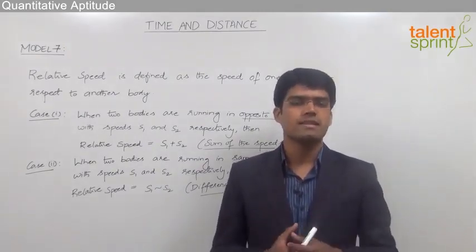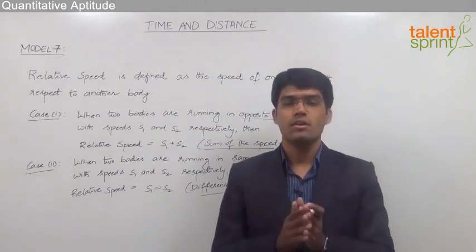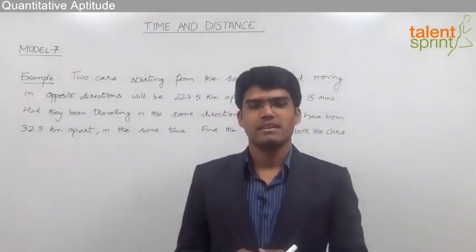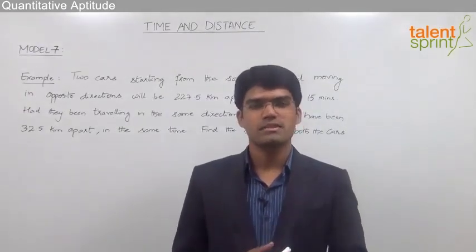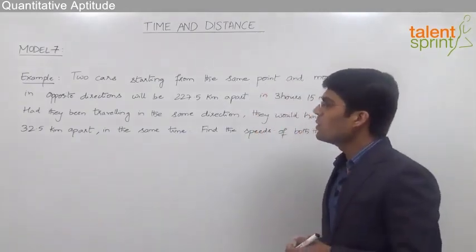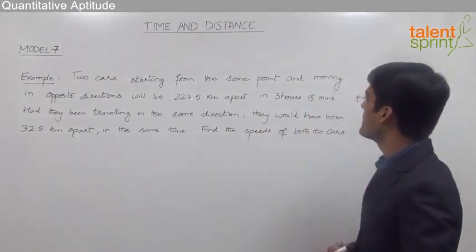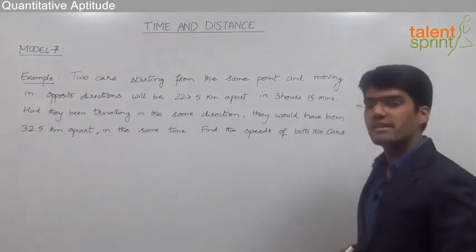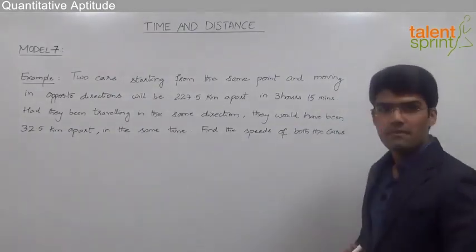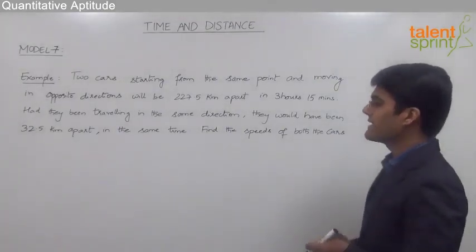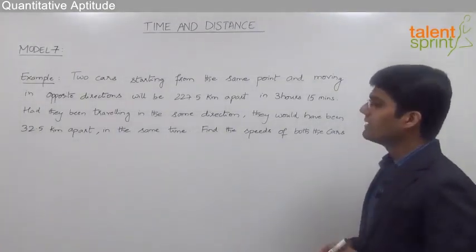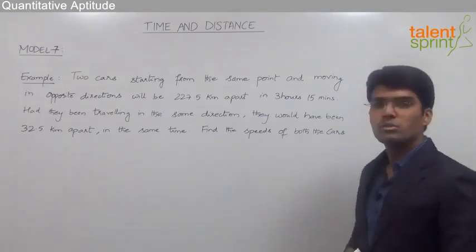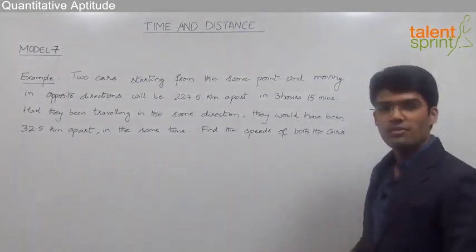When two bodies run at the same time, either in opposite directions or the same direction, we always need to consider their relative speed and not their individual speeds. Let us now take an example based on the concept of relative speed. Two cars starting from the same point and moving in opposite directions will be 227.5 kilometers apart in 3 hours 15 minutes. Had they been traveling in the same direction they would have been 32.5 kilometers apart in the same time. Find the speed of both cars.